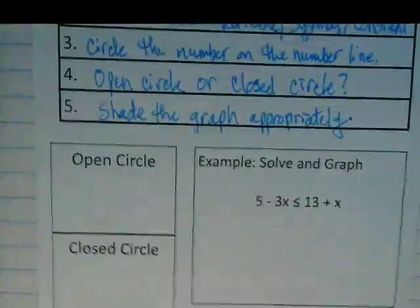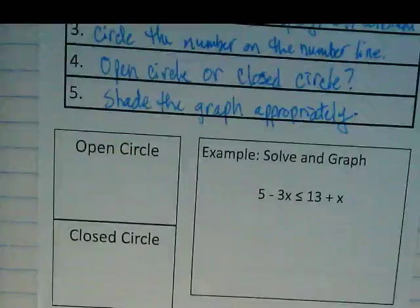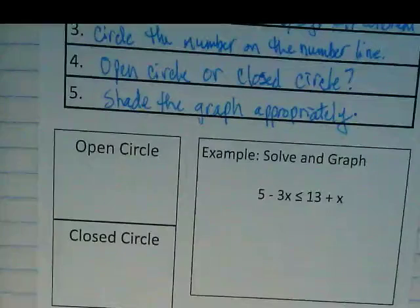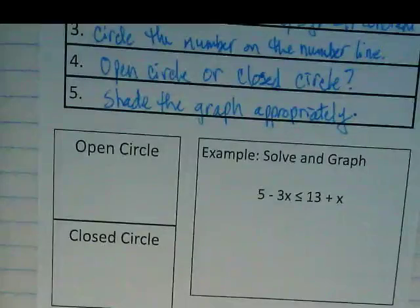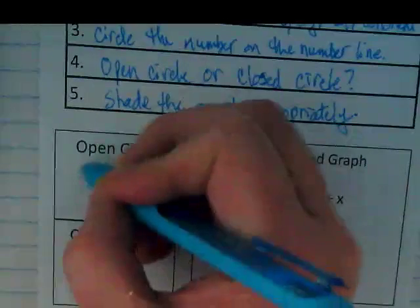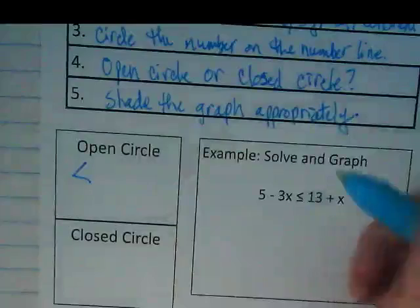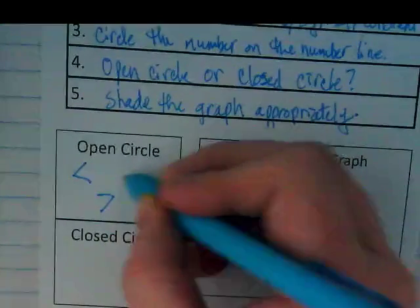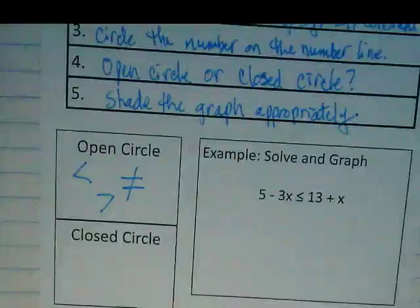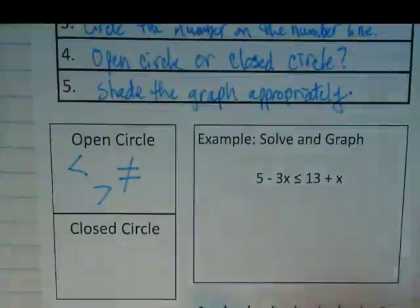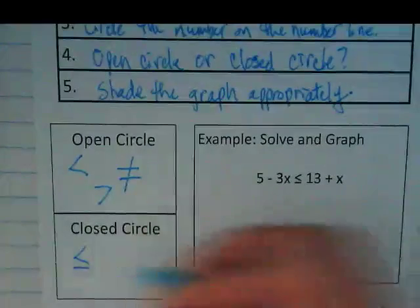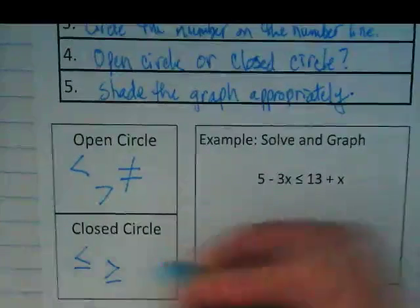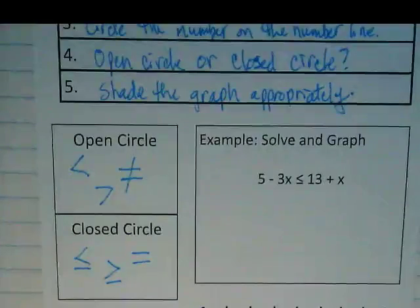Now, we're going to fill in this open circle, closed circle with some symbols. And then we're going to do an example. And then we're going to do even more with this idea of open closed circles because it's really important in the graphing. Open circles are going to be less than, greater than, not equal to. Closed circles are everything that has an equal in it. Less than or equal to, greater than or equal to, or the straight up equal sign.